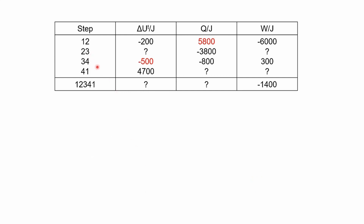Now let's look at steps 2 to 3 and 4 to 1. We still have two unknown variables for each of these steps and only one equation for a closed system, so we can't solve them directly right now. Instead, let's consider the overall process — steps 1→2, 2→3, 3→4, and 4→1. Our one mole of gas goes from state 1 through all the changes and eventually returns to where it started.